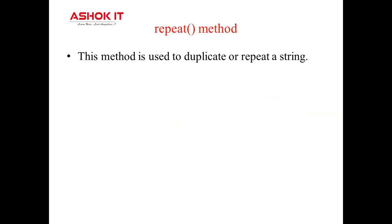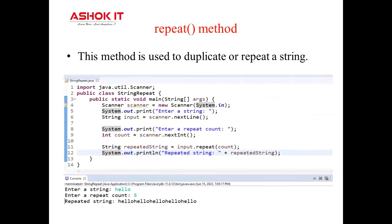The repeat method is used to duplicate or repeat a string a given number of times. It returns the concatenated string — specifically, it returns the calling string repeated n times. In Java 11, the repeat method accepts one parameter: an integer count. It is available in the string class and returns a string whose value is the original string concatenated count times. The count parameter must be non-negative; otherwise it will throw an IllegalArgumentException. In this example, the count is five, so the value string will repeat five times as a concatenated string.